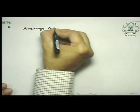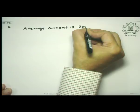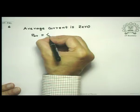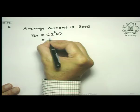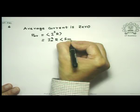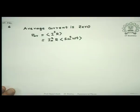What we have shown in the process is that the average current is 0. Incidentally, this does not imply that the power dissipated is 0, because power is given by I²R. So average power dissipated in the circuit is the average of I²R, which is equal to Im²R times the average of sin²(ωt). The average of sin²(ωt) is one-half over a cycle, so it is Im²R/2.